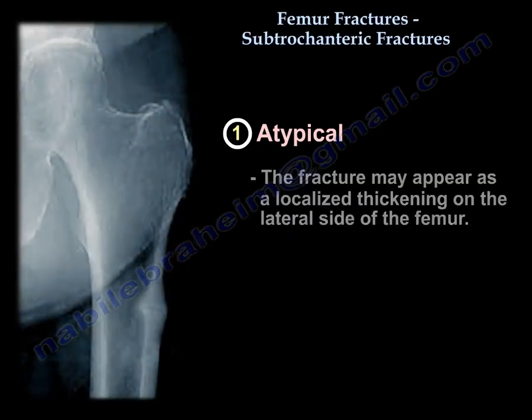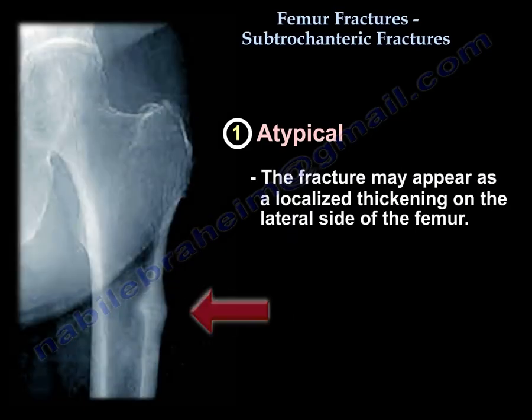Using bisphosphonates for a long period of time may cause this atypical subtrochanteric fracture of the femur. The fracture may appear as a localized thickening on the lateral side of the femur.